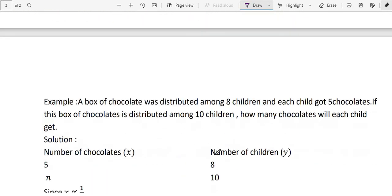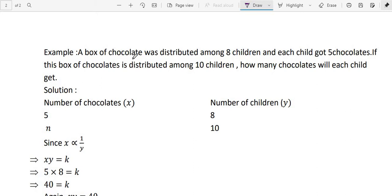Let us take another example. A box of chocolate was distributed among 8 children and each child got 5 chocolates. This is the problem. First time chocolate is distributed among 8 children and each child will get how many chocolates? 5. Say number of children Y and number of chocolates X. First time children 8, then chocolates 5. Second time, how many children? 10. How many chocolates? Don't know. Write N.